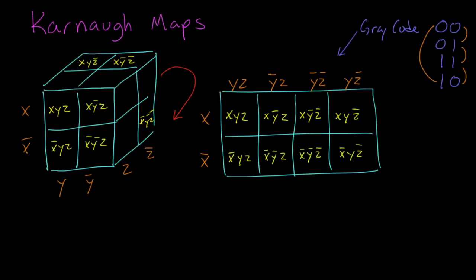Following the line of reasoning from the previous screen, the top row here is just x. The bottom row is not x. This left hand column is just yz, which is what it's labeled with at the top. The next one over is not yz. The third one is not y, not z. And the fourth one is y, not z.